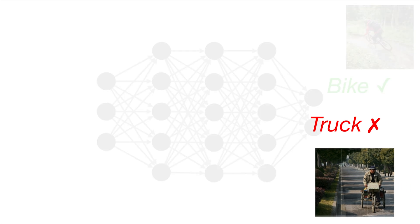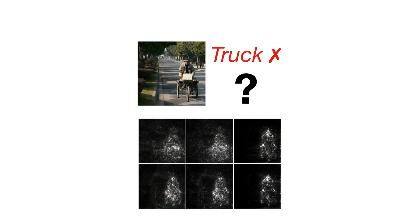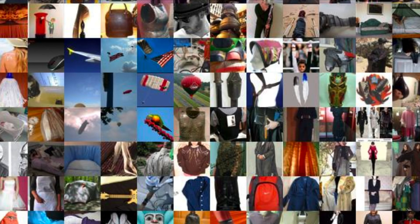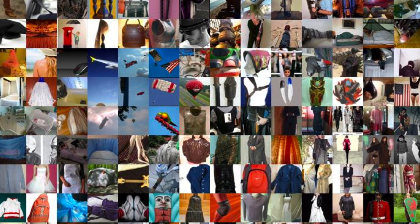Existing work on interpreting neural network predictions for images often focuses on explaining predictions for single images or neurons. But predictions from state-of-the-art models are often computed based off of millions of weights optimized over millions of images. Such explanations can easily miss a bigger picture.